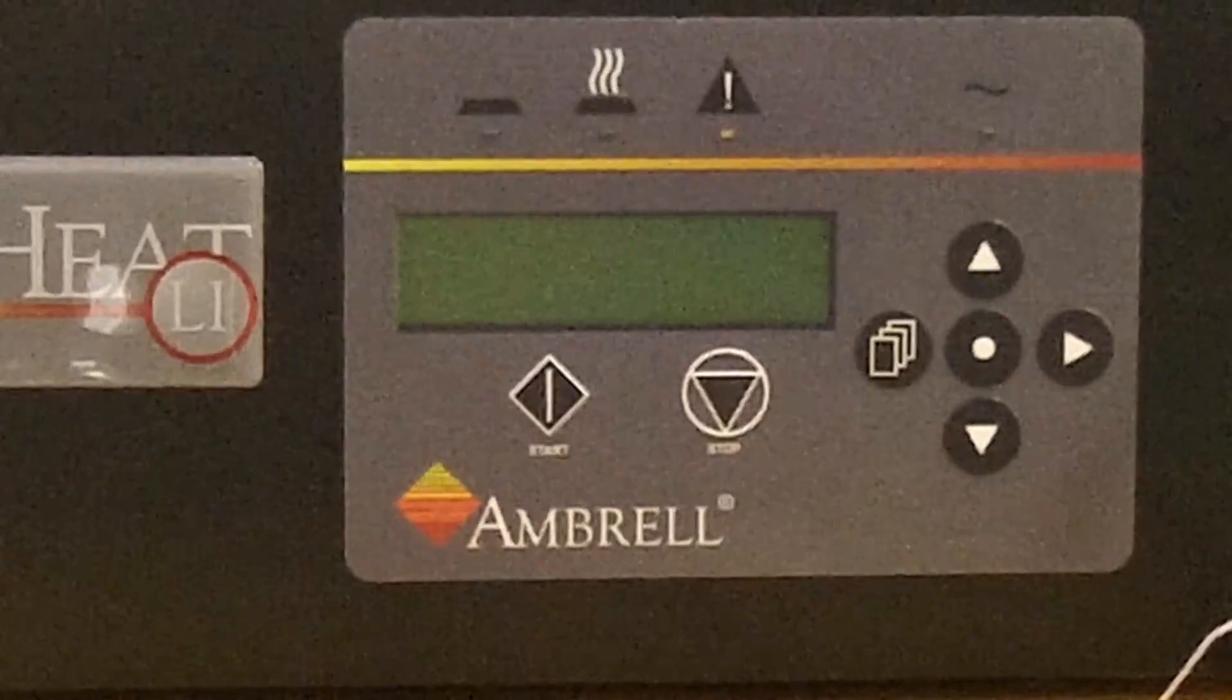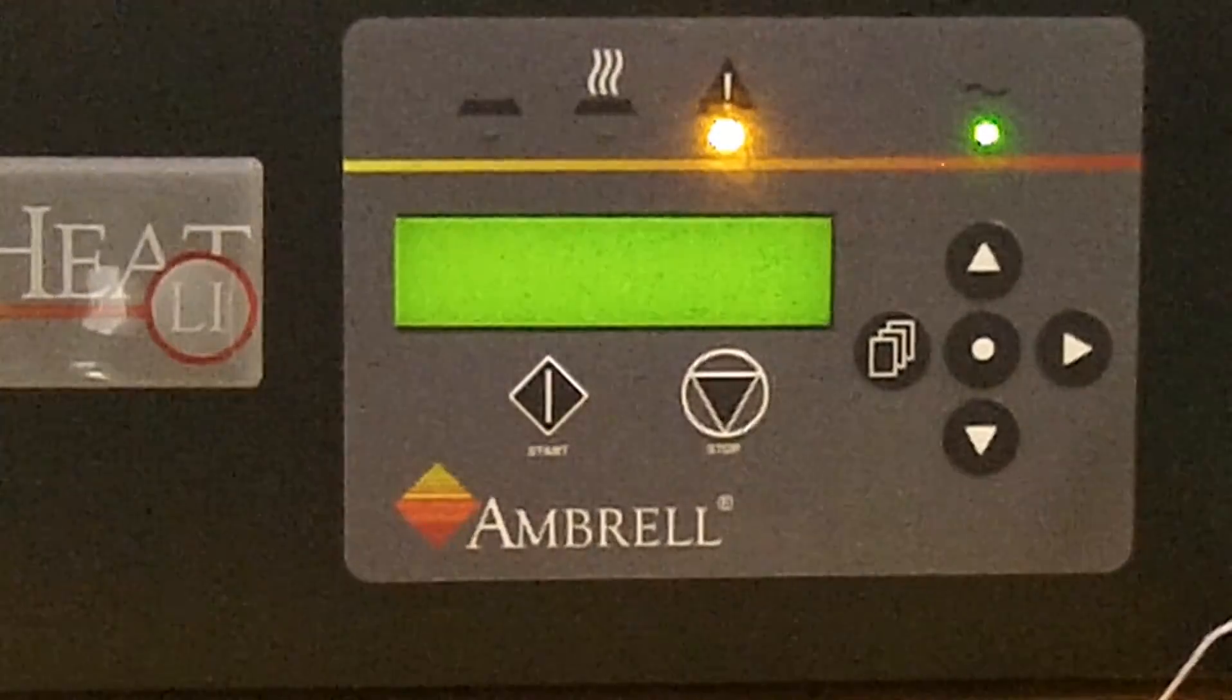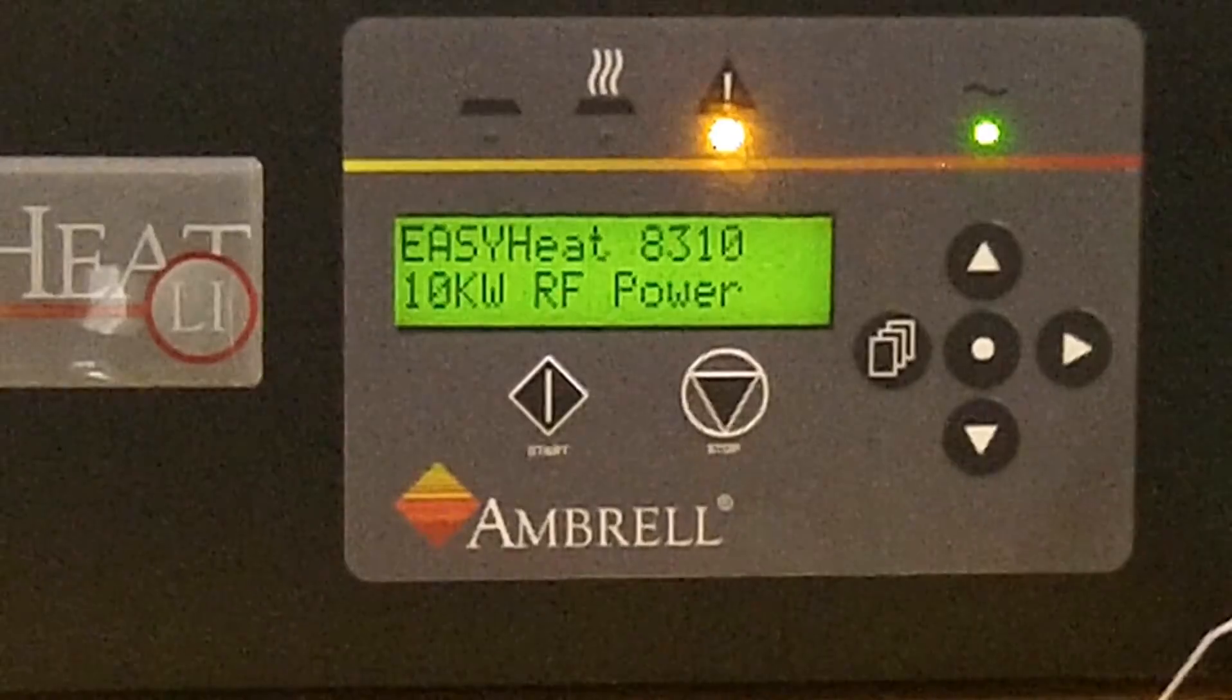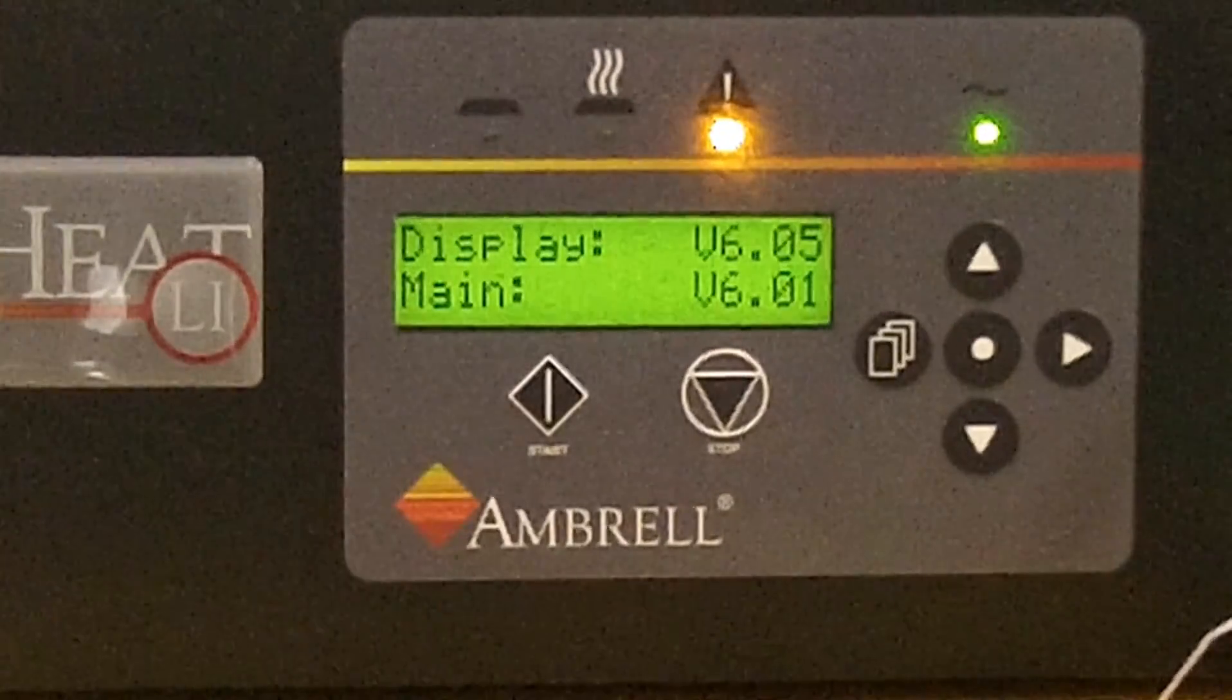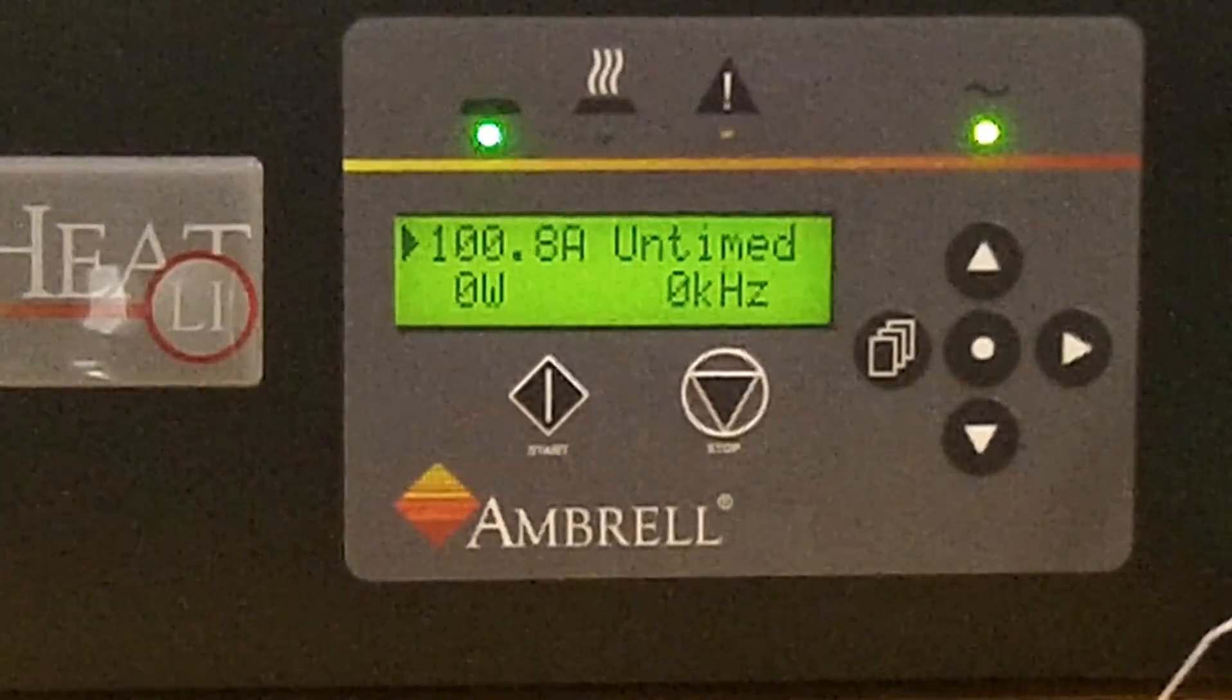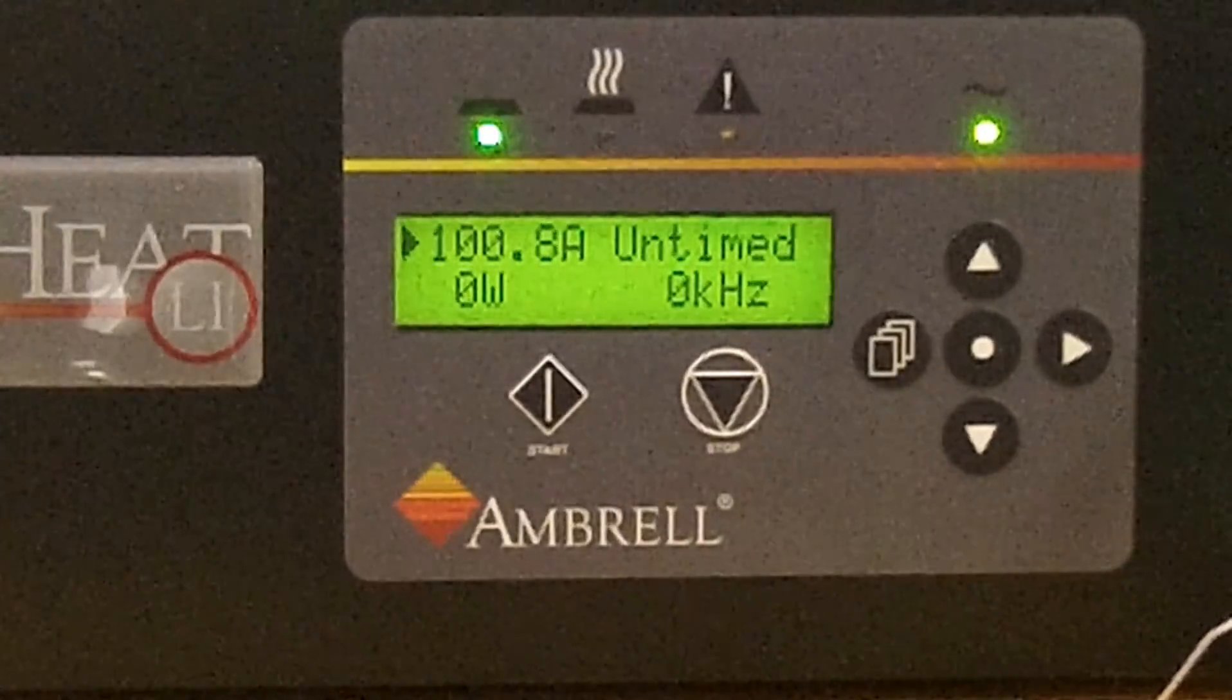Now, let's turn on your EasyHeat Li. First, turn the power on using the circuit breaker on the back of your EasyHeat Li. As you can see, the display panel will illuminate once your unit has been successfully powered on. It'll just take a moment to boot here. Now, the first time you turn on your EasyHeat Li, the factory display settings will appear.